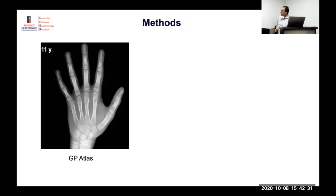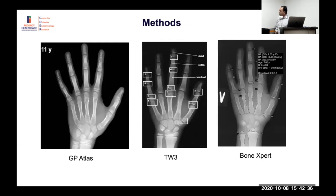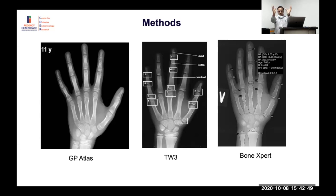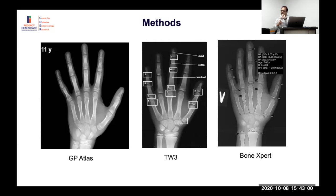Methods available include the Greulich-Pyle atlas, the Tanner-Whitehouse atlas, and automated bone age tools. The GP atlas takes a holistic approach — comparing the whole hand image to a reference. Tanner-Whitehouse divides the image into different parts, gives individual ratings, and combines them. Both have advantages and disadvantages.